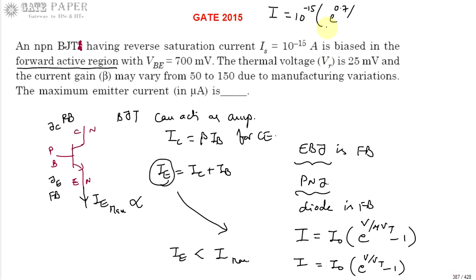Times e^(0.7/0.025) minus 1. This will be approximately equal to 1446 microamperes. So the answer is 1446 microamperes. This is the maximum emitter current. Thank you.